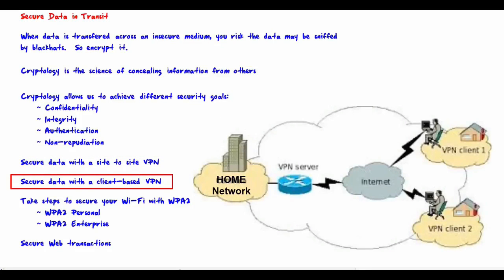Secure data with a client-based VPN. Here, a piece of software is installed on the end user's PC. This allows the remote user to establish a VPN from his laptop to the security appliance on their home network — meaning the main office, not a residential home. The VPN allows all data between the laptop and the remote network to be tunneled and therefore encrypted. You don't care if the local connection is secure, because even if the data could be sniffed by a black hat, they would not be able to decipher or read it.